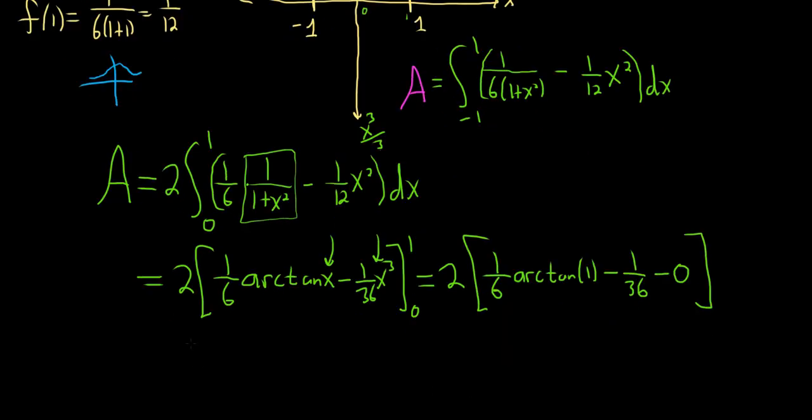So it all goes away. So this is equal to 2 bracket 1 6th. The arctangent of 1 is pi over 4. Just from memory. It's an easy one. Minus 1 over 36. This is 2 bracket pi over 24. Minus 1 over 36.